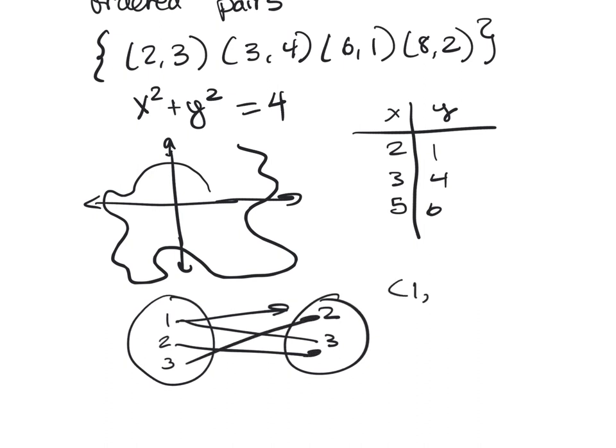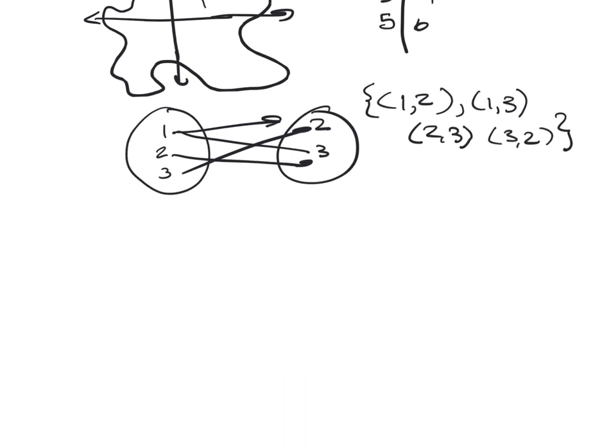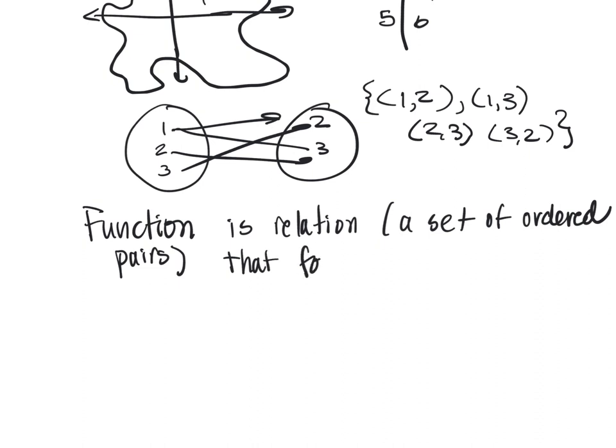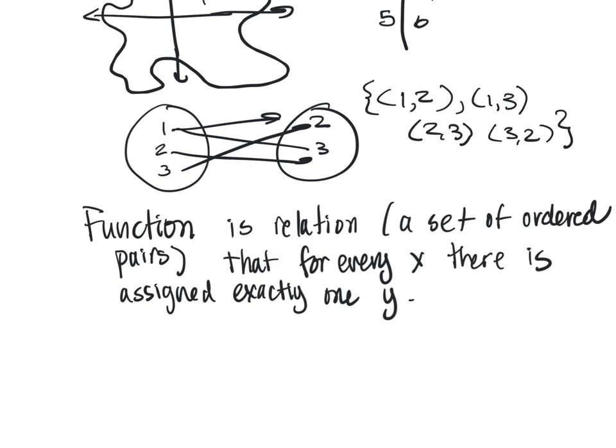So this would be the relation. This would represent (1,2), (1,3), (2,3), and (3,2). So a function is a relation, again, a set of ordered pairs, that for every x there is assigned exactly one y.